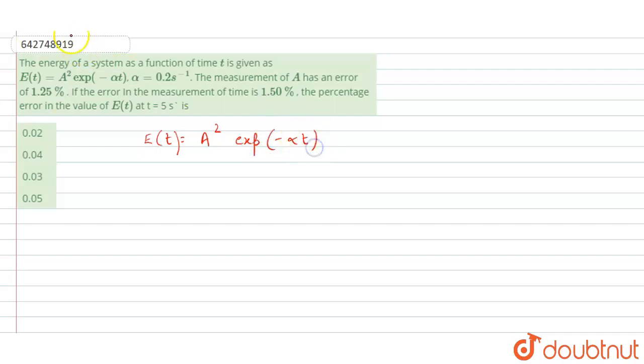Now take logarithm on both sides. Take log on both sides. Therefore it will come as ln E = 2 ln A + (-αt).